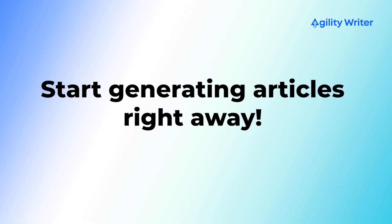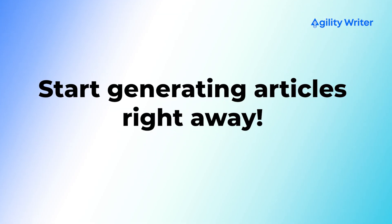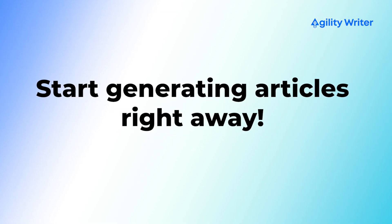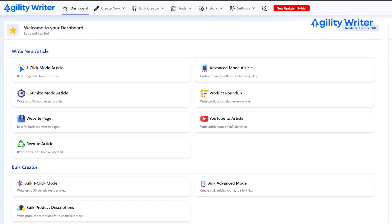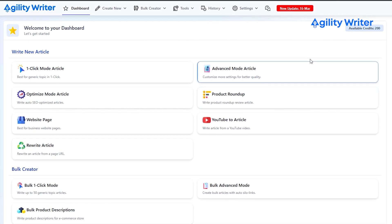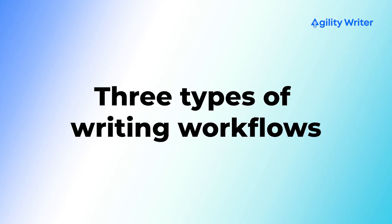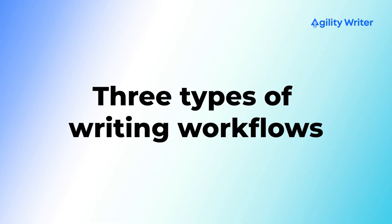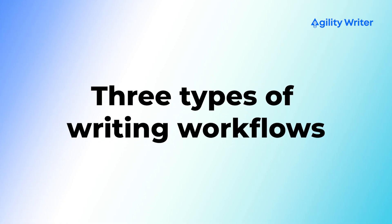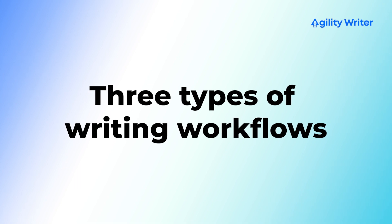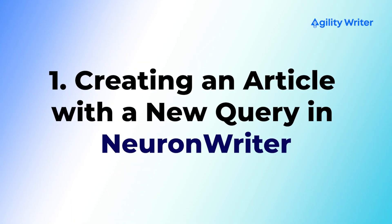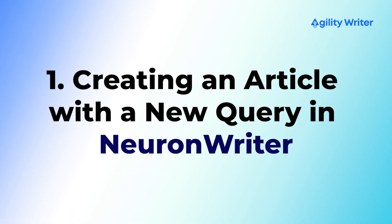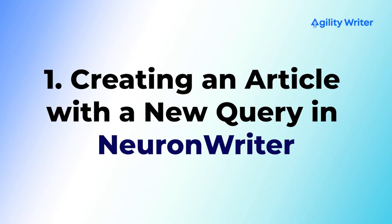Now that you're set, you can start generating articles right away. But if you want AgilityWriter to create content efficiently, I recommend that you take a look at the different types of NeuronWriter workflows. The first workflow is creating an article with a new query in NeuronWriter.